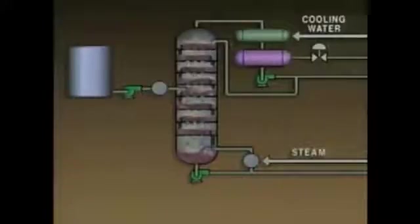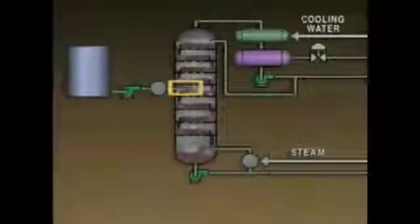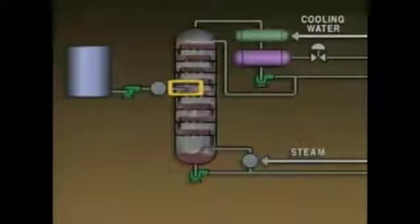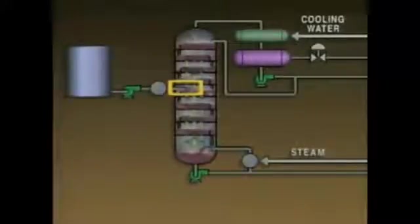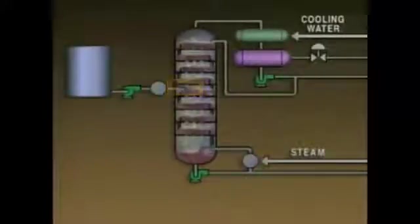For example, an increase in differential pressure could be an indication that the feed rate is too high. Too much feed entering the tower will overload it. If this happens, the differential pressure will increase and the tower will be unable to make the desired separation. In this case, it might be necessary to decrease the feed rate.